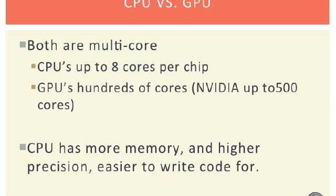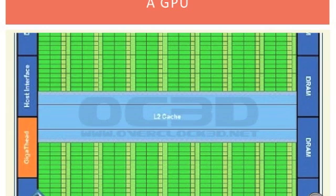CPUs and GPUs are both multi-core these days. CPUs use up to about eight cores per chip, and GPUs can do hundreds of cores per chip. CPUs have a little bit higher memory and higher precision, and they're much easier to write code for. But GPUs have so many cores that when you make the code investment, you can often get a great speedup.